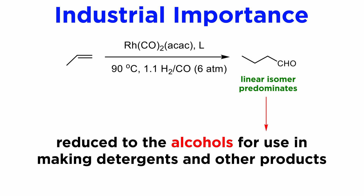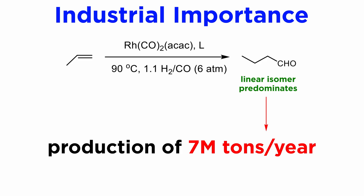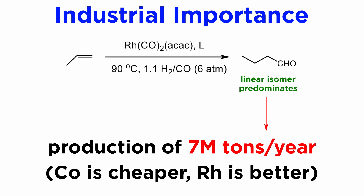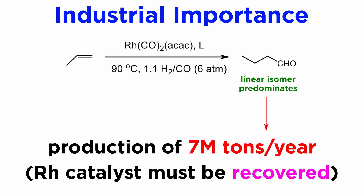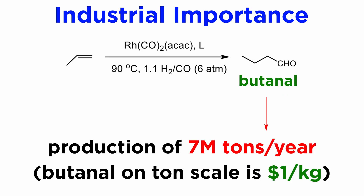This reaction is very important industrially, as the linear aldehydes are often immediately reduced to the parent alcohols, which are used in the manufacturing of detergents and other products. The output of aldehydes by hydroformylation has reached 7 million tons per year. Some companies use the cheaper cobalt catalysts; others have industrialized the more efficient and selective rhodium process. In the latter case, recovery of the metal is an essential part of the task to keep costs low. Just to give you an idea of the efficiency, butanal is available on the ton scale for prices around $1 per kilogram — not bad for a process using sophisticated rhodium catalysts and fancy ligands.